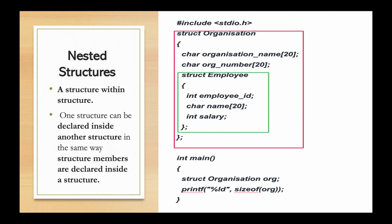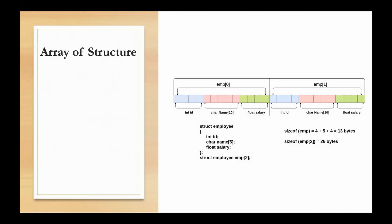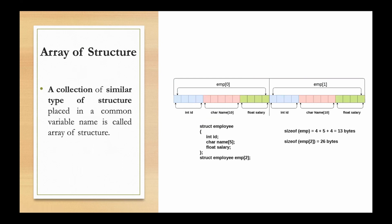An array of structures is a collection of similar type of structures placed in a common variable — this is called an array of structures. For example, if an organization has multiple employees, you can organize all employee records using an array of structures, where each element of the array holds one employee's data.